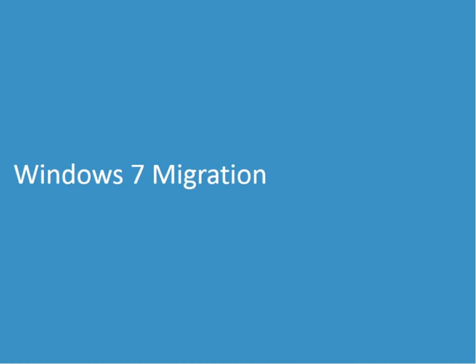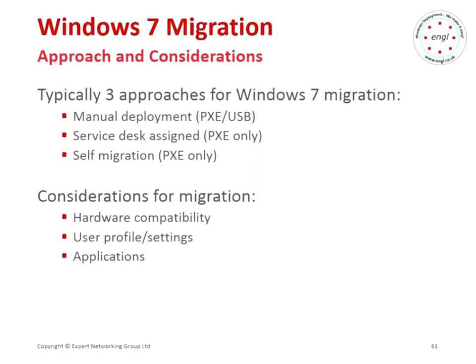Once we've got all our bundles configured, we have a fully automated Windows 7 deployment process that will go from bare metal up to a fully built machine with all the applications for our specified location and site. The next thing we need to look at is how we're actually going to roll this out to our various locations within Springfield.